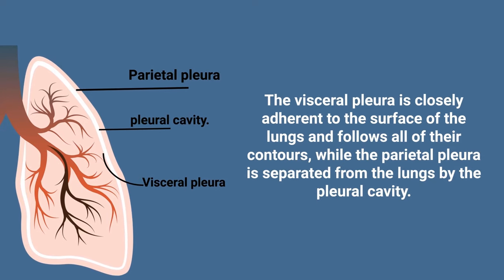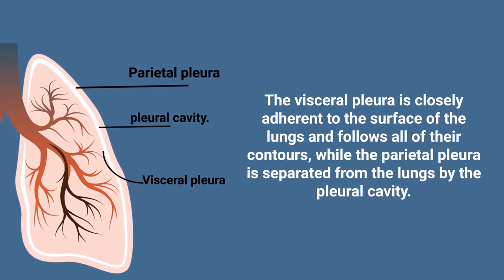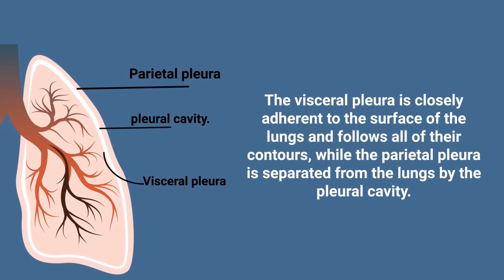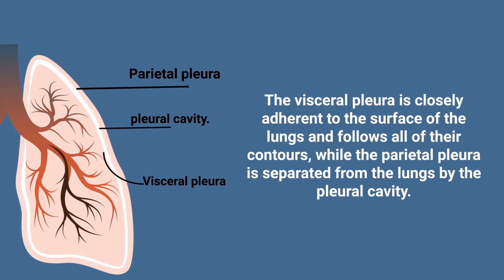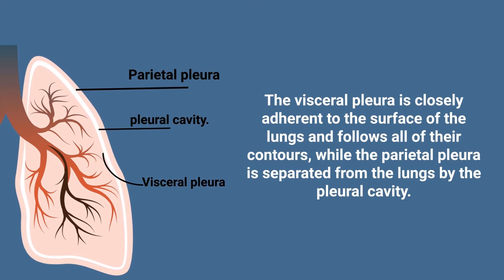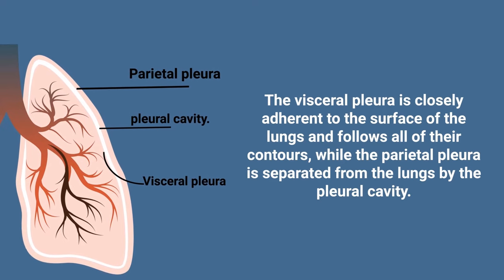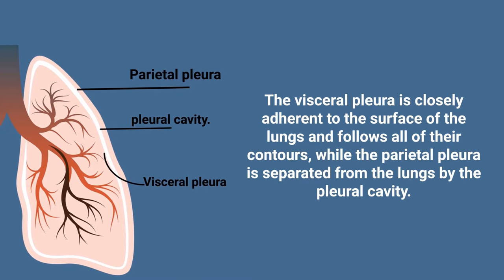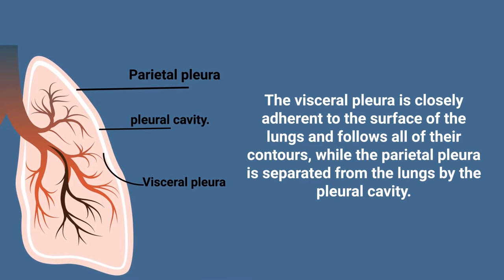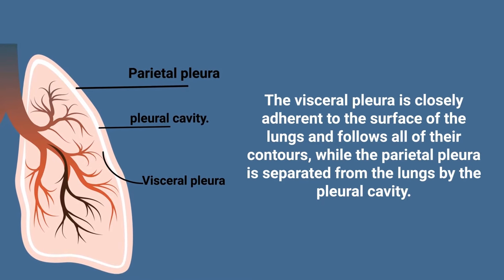The visceral pleura is closely adherent to the surface of the lungs and follows all of their contours, while the parietal pleura is separated from the lungs by the pleural cavity, which is the space between the two layers that contains the pleural fluid.